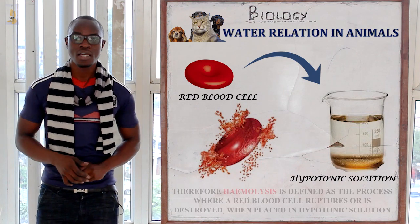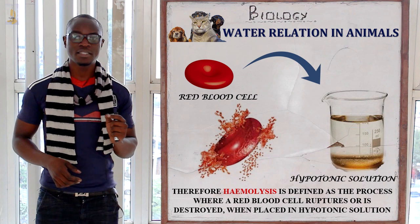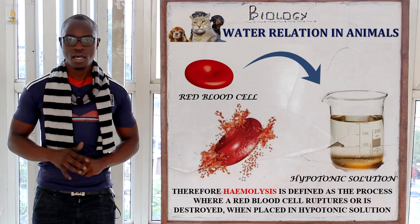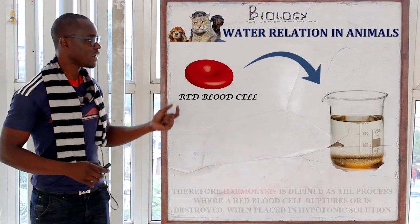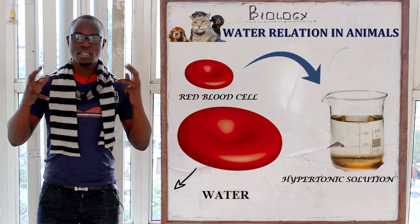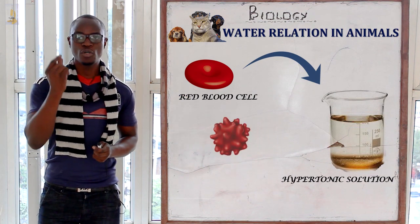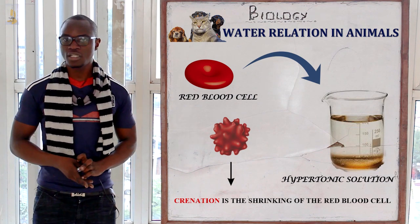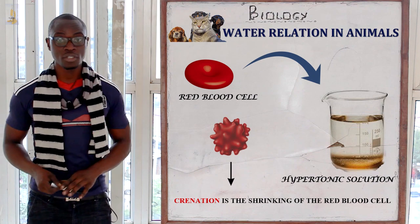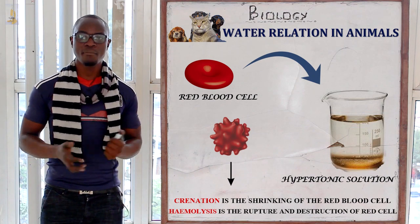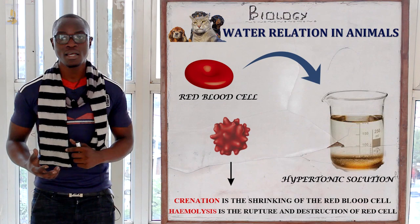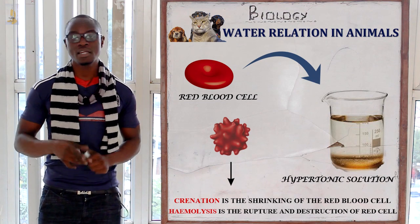If asked to define haemolysis, you will say it is the process where a red blood cell, when placed in a hypotonic solution, swells up, gains water, and bursts. When you take a red blood cell and place it in a hypertonic solution, the red blood cell will lose water to the surrounding environment and shrink. The shrinking of the red blood cell is called crenation. So haemolysis is the bursting of the red blood cell after absorbing water, while crenation is the shrinking of the red blood cell after losing water when placed in a hypertonic solution.